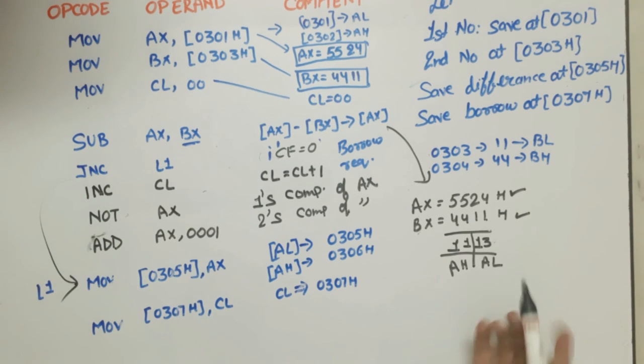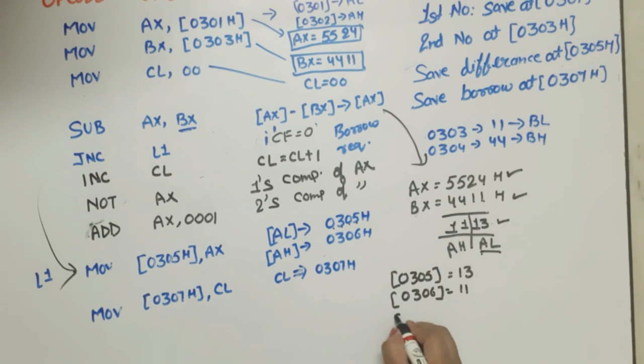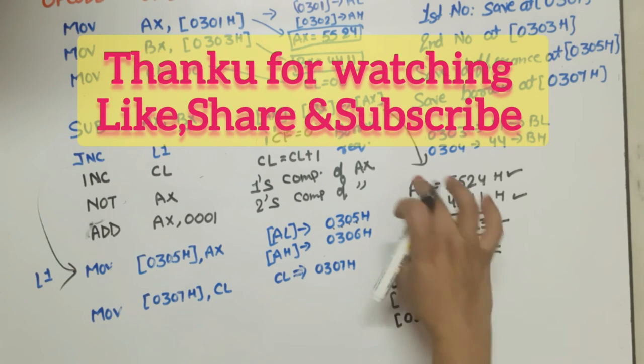Now this line will execute, so AL value will go to 0305. What is the AL value? 13. So what will be saved at 0305? Content of this is equal to 13. And what is the content of 0306? 0306 content will be 11. And what is the borrow value? Borrow value will be saved at 0307h, which will be 00 for this data.